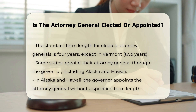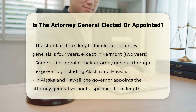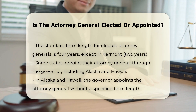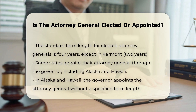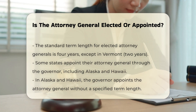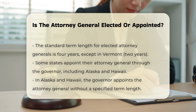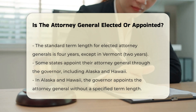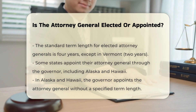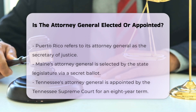Appointed by the governor. In some states, the Attorney General is appointed by the governor. This method is used in Alaska, Hawaii, New Hampshire, New Jersey, Wyoming, American Samoa, Puerto Rico, and the U.S. Virgin Islands. In Alaska and Hawaii, the governor appoints the Attorney General without a specified term length. While in other places, like Puerto Rico, the position is officially known as the Secretary of Justice, but is commonly referred to as the Attorney General.